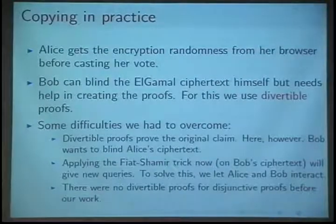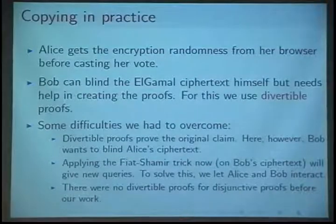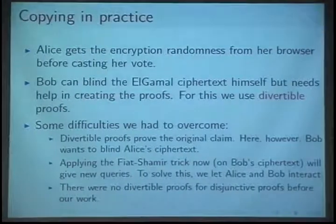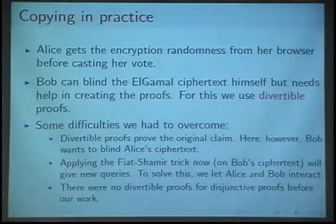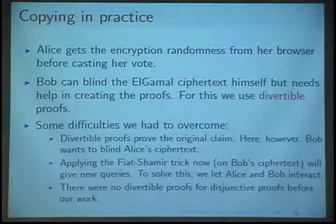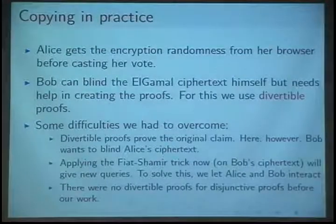Bob will actually blind that vote to make sure that Helios is not able to detect it. But that's not enough, because a proof also has to be given, and we make that proof divertible. There are some difficulties with that — for example, divertible proofs are actually from the original claim, and it's just that the distribution of what you receive is different.